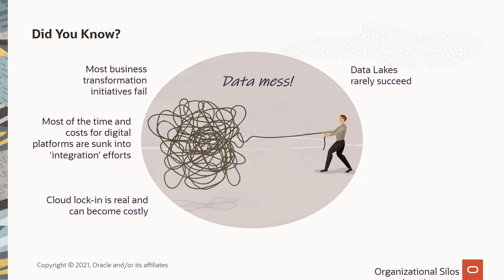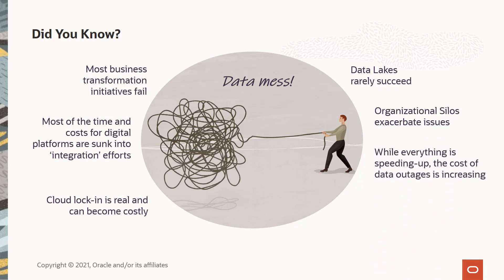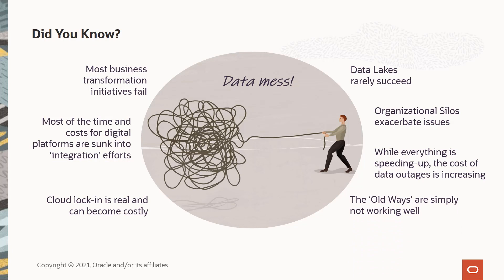Organizational silos exacerbate issues, often causing problems with cross-functional programs. And while everything is speeding up in terms of pace of innovation — IoT events, adding new systems, and your competition — the cost of data outages is increasing. The old ways are simply not working well. Monolithic tech architectures of the past are cumbersome, expensive, and inflexible.